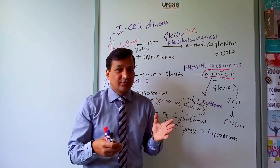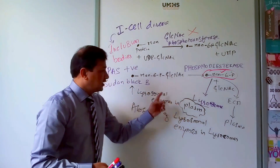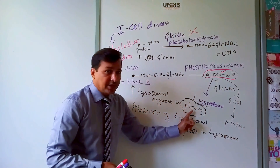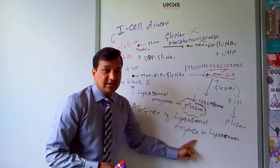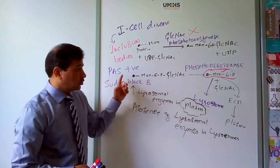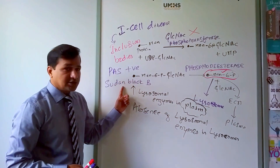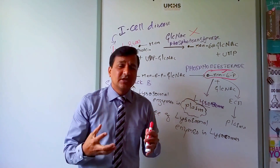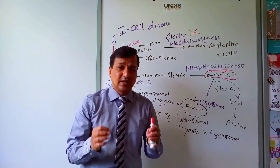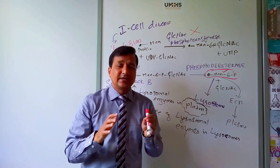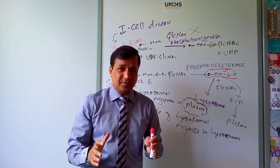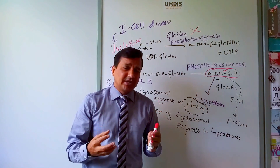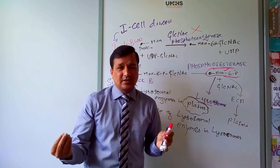How do you differentiate Hurler syndrome from I-cell disease? Look for these two signs: one, look for increased lysosomal enzymes in the plasma with absence of them in the lysosome; second, look for the staining material in tissue — PAS positive and Sudan black B positive points to I-cell disease. In Hurler syndrome, accumulation of glycosaminoglycans is found in lysosomes, meaning it is PAS positive only — it is not Sudan black B positive. With these points you should be able to differentiate I-cell disease from Hurler syndrome.